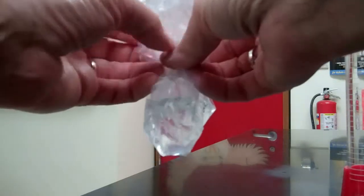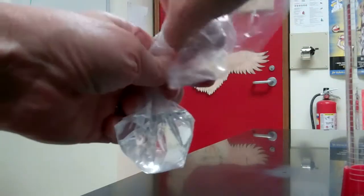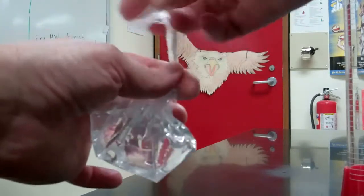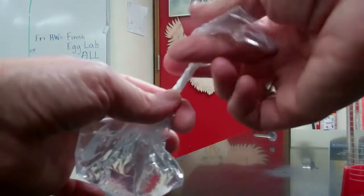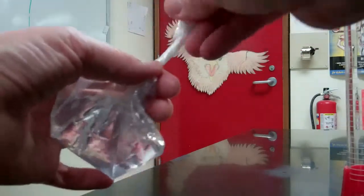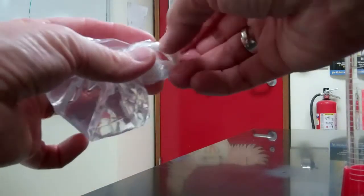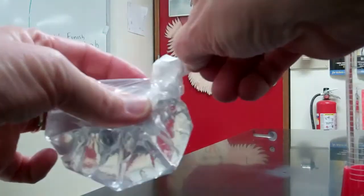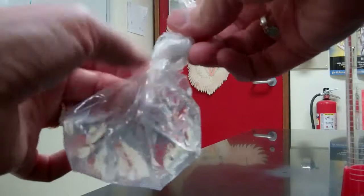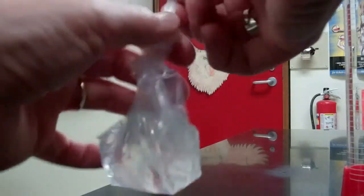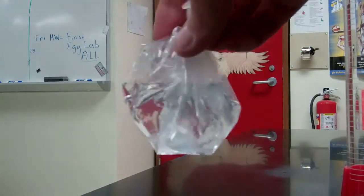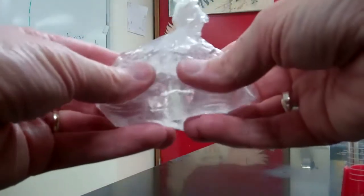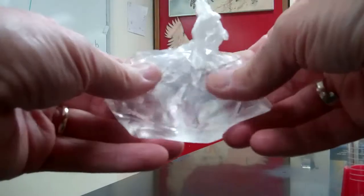And now you're going to get the air out and twist this a whole bunch of times, and tie it up in a knot. So there, I got most of the air out. So this is my little model of a cell, and this baggie is like the cell membrane.